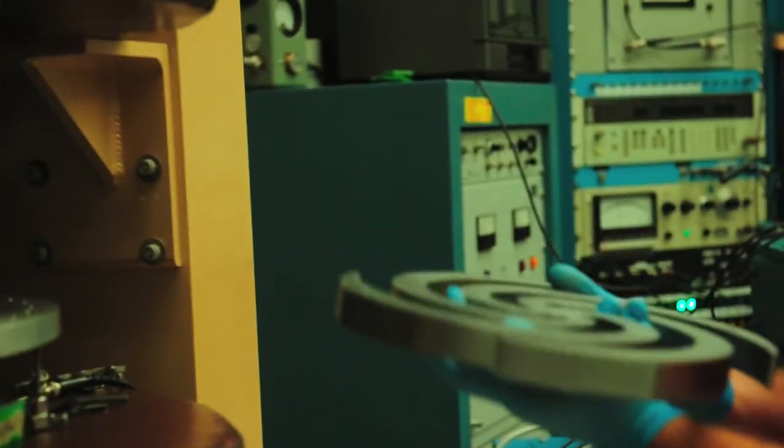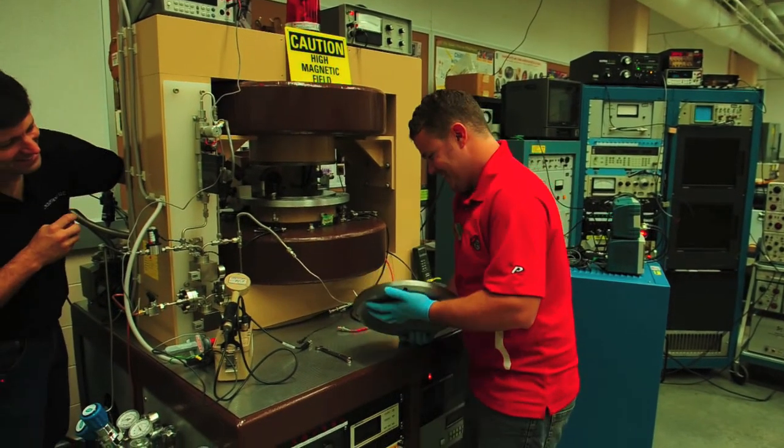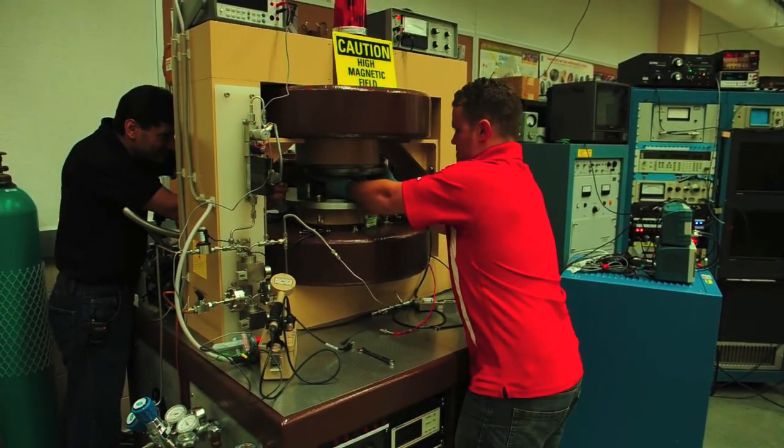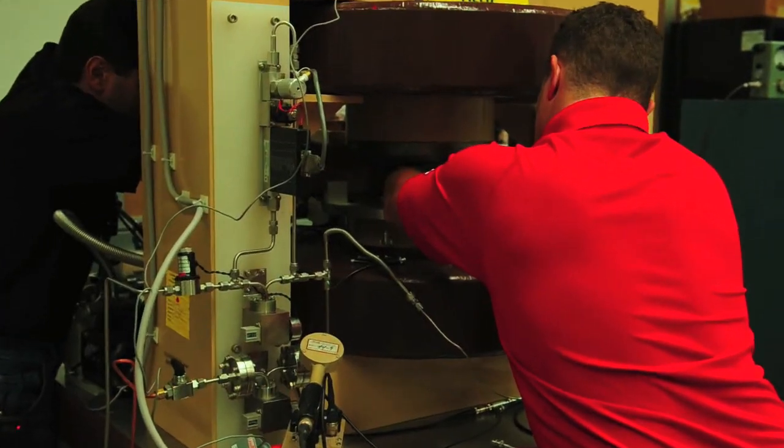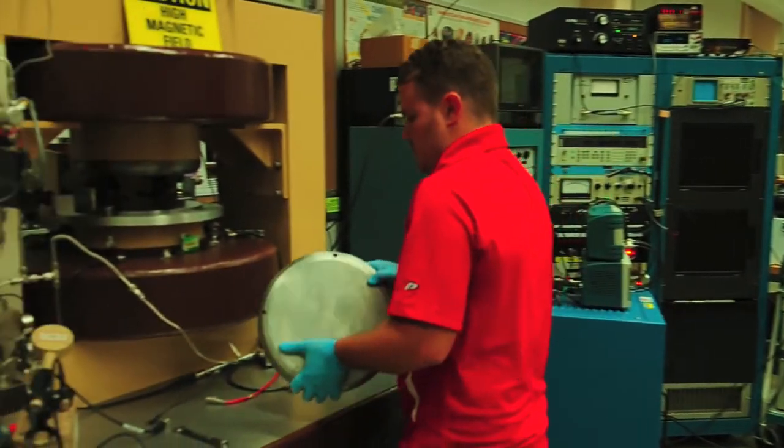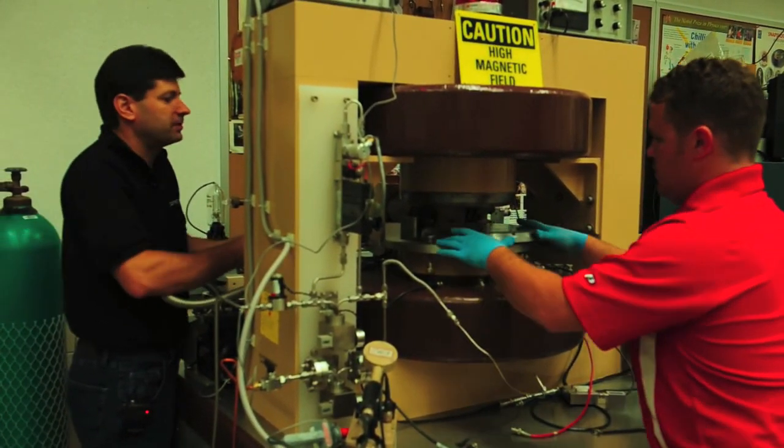However, to demonstrate our standard cyclotron operation, we are replacing them with a set of weak focusing pole tips. These were also designed by a previous group of our cyclotron students about 10 years ago. Each pole tip is only held on by four bolts so as you can see we can easily change the pole tips allowing us to experiment with many different magnetic field configurations.